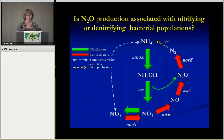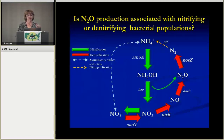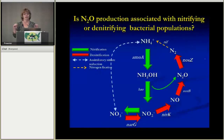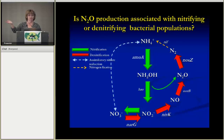Then we looked at denitrification — the anaerobic system — which is a bit more complicated. We looked at three different genes: NARG, the nitrate reductase; NIRK, the nitrite reductase; and NAZG, the nitrous oxide reductase. These could be the same organisms carrying all of the genes. I want to point out that the NAZG group — the nitrous oxide reducers — are the only organisms that take N2O to nitrogen gas, making them an immensely important group. Microbiologists focus a lot on nitrous oxide reductase populations.